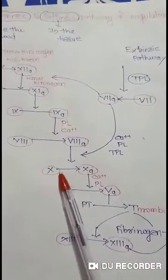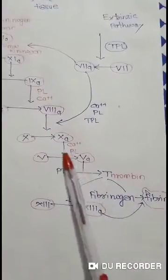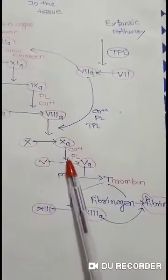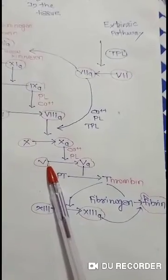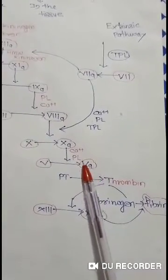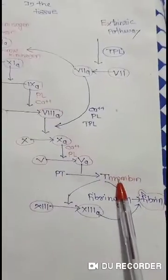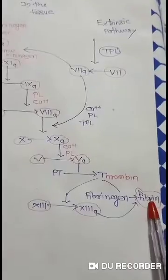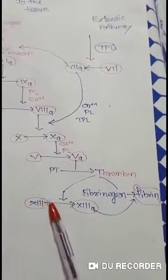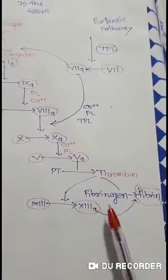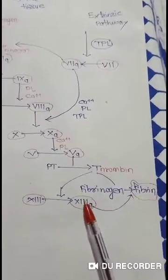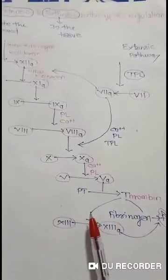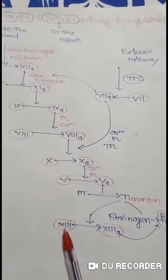After Factor Number 10, there is a beginning of the Common Pathway — meaning the Activation of Factor Number 5. This Activated Factor Number 5 converts Prothrombin to Thrombin. This Thrombin helps in the conversion of Fibrinogen to Fibrin. Thrombin also converts Factor Number 13 to Activated Factor Number 13, which is the Fibrin Stabilizing Factor, and this also converts Fibrinogen to Fibrin. This is the Intrinsic and Extrinsic Pathway of Coagulation.